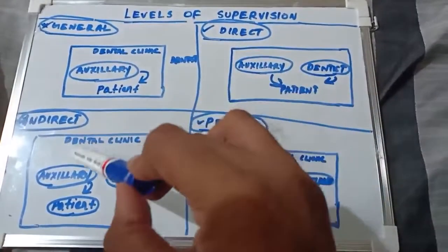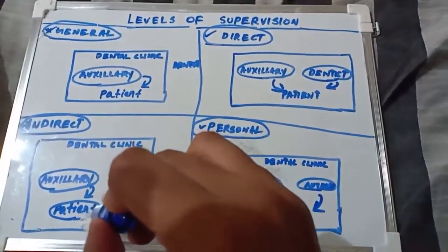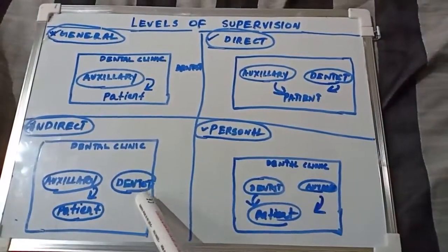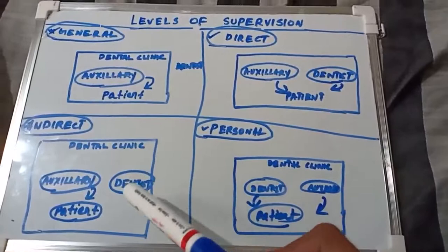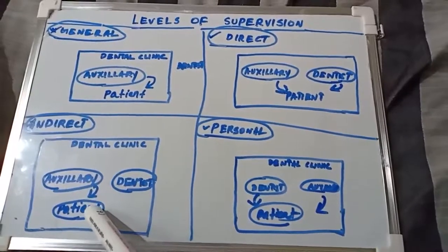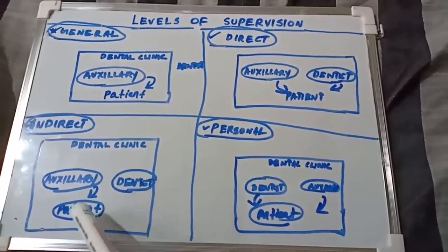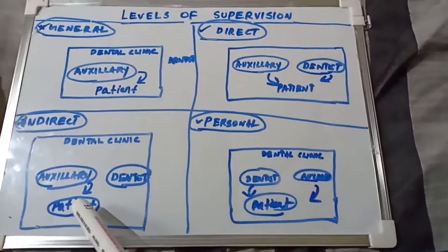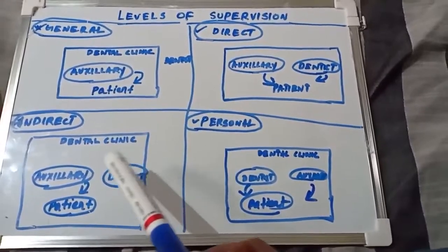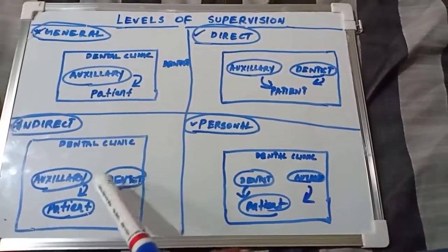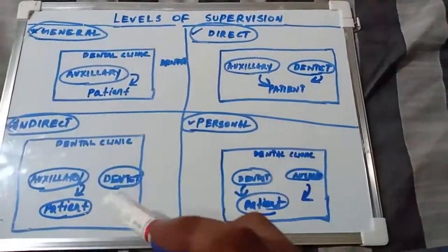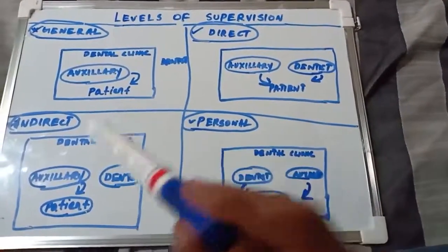In indirect supervision, the dentist is present in the dental clinic and the auxiliary is performing procedures on the patient. The dentist might be working on another patient but has properly instructed what has to be done. At the end, the dentist will check the procedure and its details. The dentist is in the dental clinic, has authorized what has to be done, and will recheck it before the patient leaves.